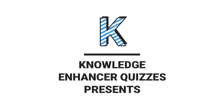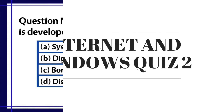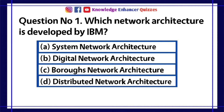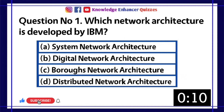Knowledge Enhancer Quizzes presents Internet and Windows Quiz 2. Question number 1: Which network architecture is developed by IBM? A. System network architecture. B. Digital network architecture. C. Burroughs network architecture. D. Distributed network architecture.